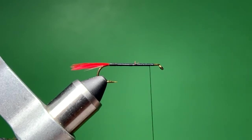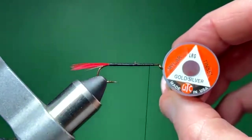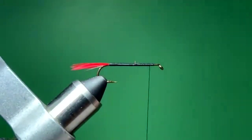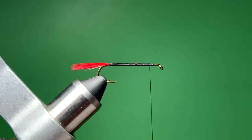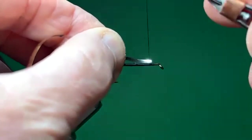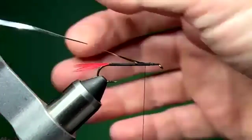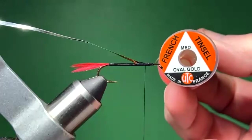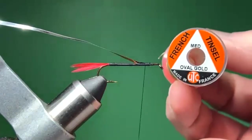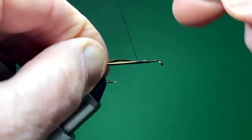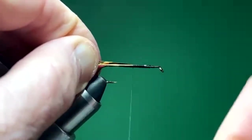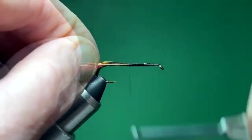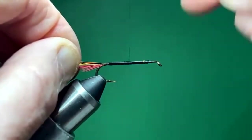And then I'll tie in some large mylar tinsel. It's gold and silver, silver on one side, gold on the other. And since I want the gold side to be facing out, I'm going to tie it with the silver side facing me. And then the rib on this fly is oval gold tinsel. This is a size medium. Now I'll try to do touching turns as much as possible and then come back forward to the front.